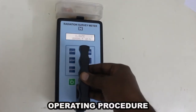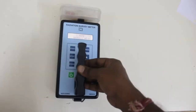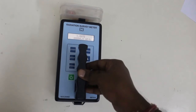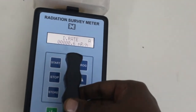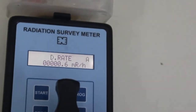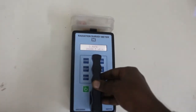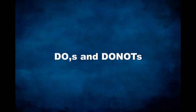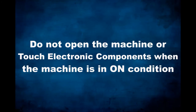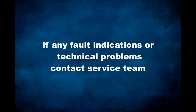Operating procedure: this unit is given to you in ready-to-use condition. On unpacking, the user is advised to go through the instruction manuals. The user can operate the equipment to make measurements in CPS, CPM, and dose rate modes as per requirement. The user can also store data readings if required, and recall the data using the software provided at an extra cost. Do not open the machine or touch electronic components when the instrument is in the on condition. Replace batteries when needed. If fault indications are visible on the display, please contact our service team.